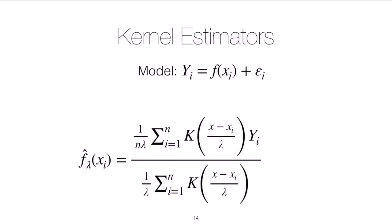A kernel estimator can be understood as a simple weighted local moving average of the response. To better understand that, let's consider a relatively simple model. A response is equal to some unknown function of a predictor X plus some noise, and we typically make the assumption that our epsilon term is normally distributed with zero mean and some constant variance for all i.